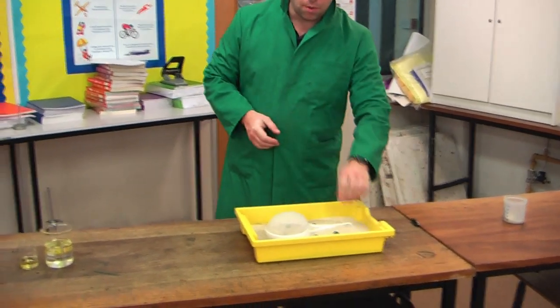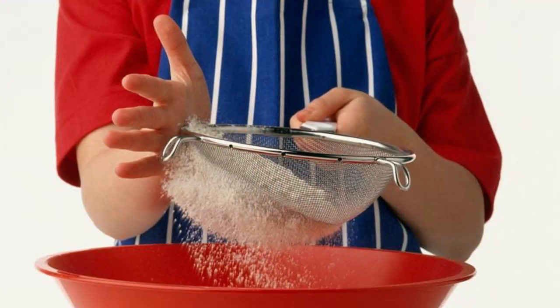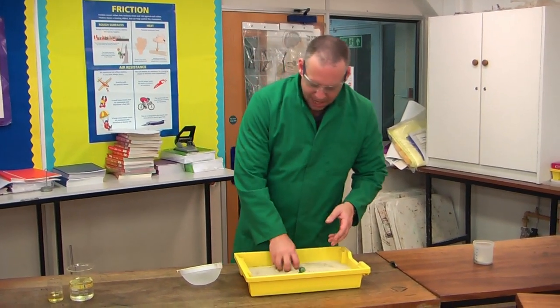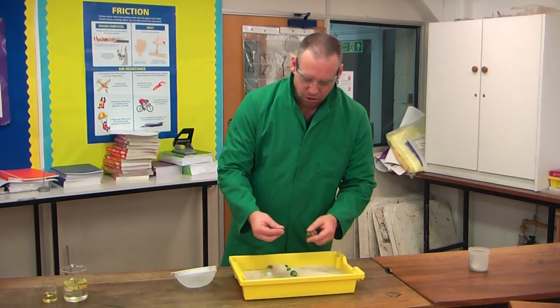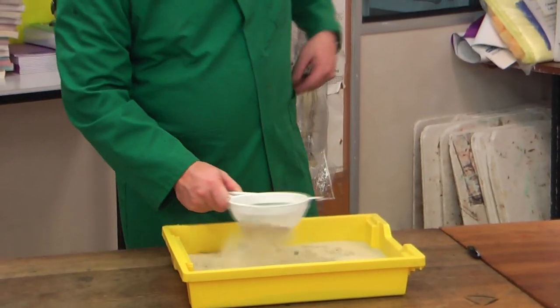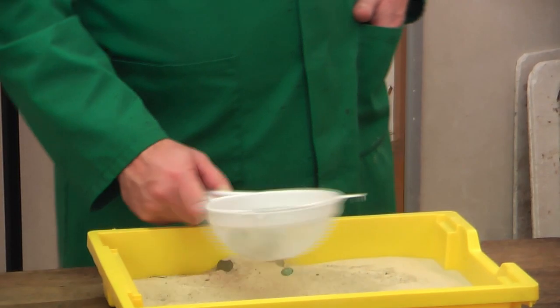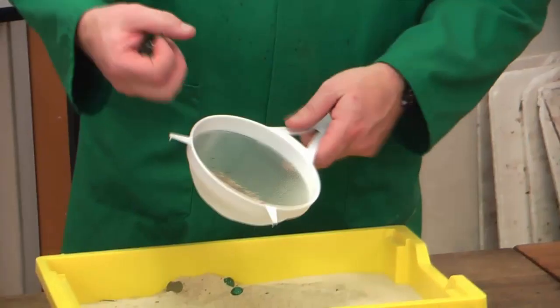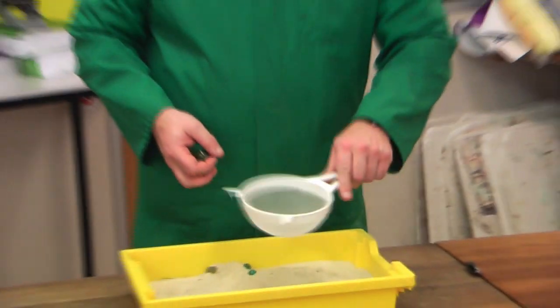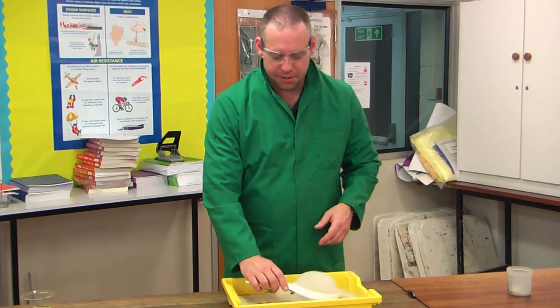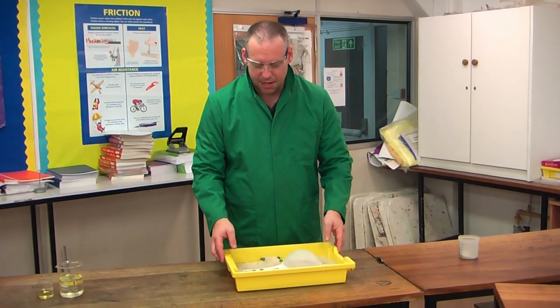So number two. Number two is something we call sieving. Sieving is where we've mixed two solids together and the solids have got different sizes. So here, not a very subtle mix, but I've got marbles and I've got sand. And if I want to separate those very quickly, I put them in the sieve. The sand passes through the sieve and I'm left in the end with my marbles. I've lost my marbles. And actually all my larger bits of rock. So I've managed to separate different solids of different sizes.